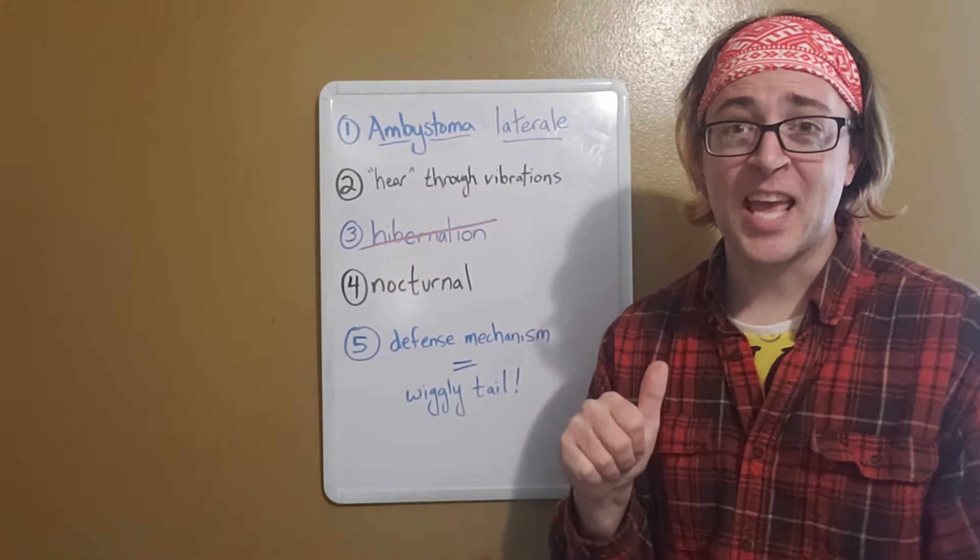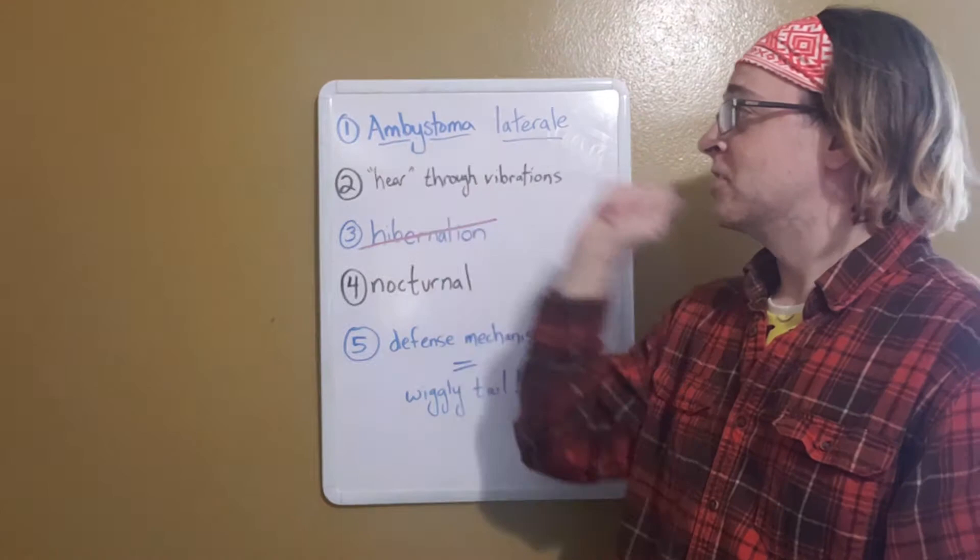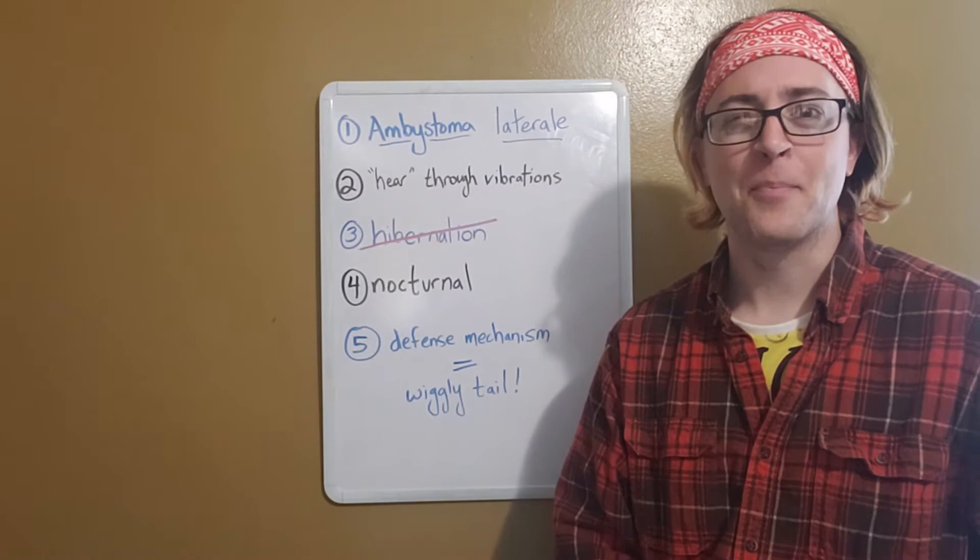Fact number one. The scientific name of the blue-spotted salamander is Ambystoma laterale. That first word is the genus, Ambystoma, that comes from two Greek words, ambi, which has to do with a cup, and stoma, which has to do with a mouth.